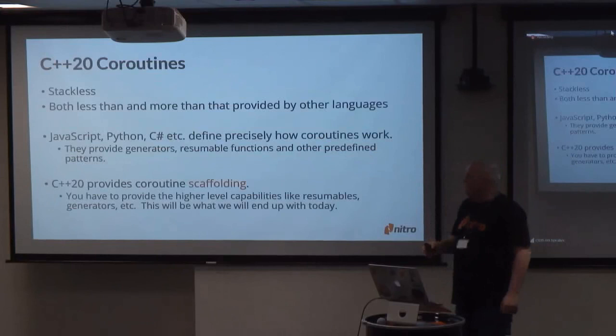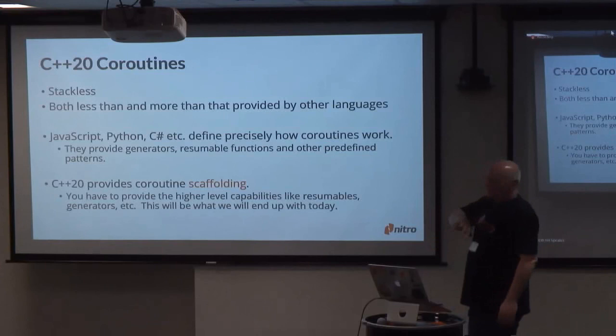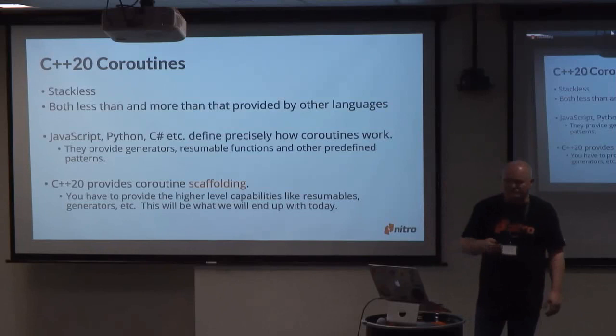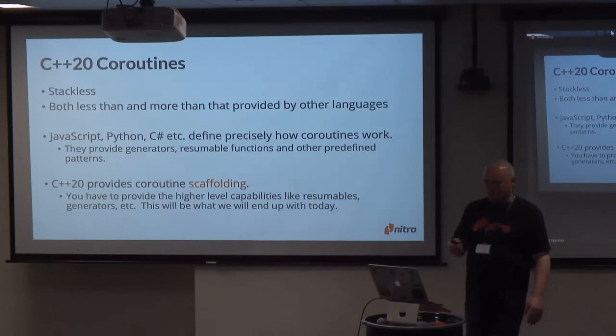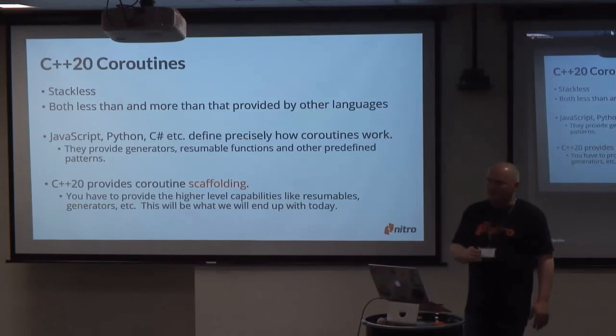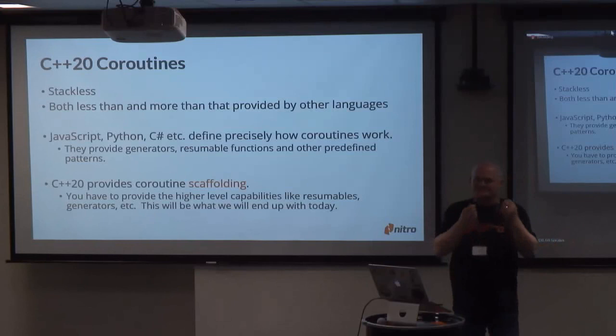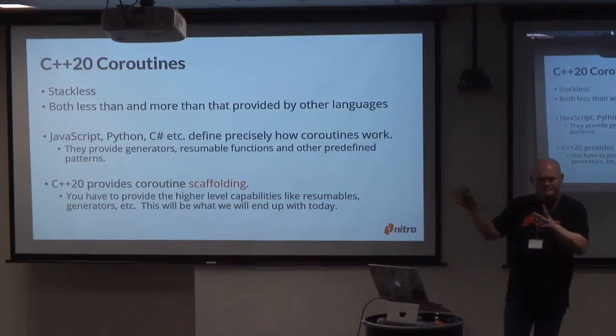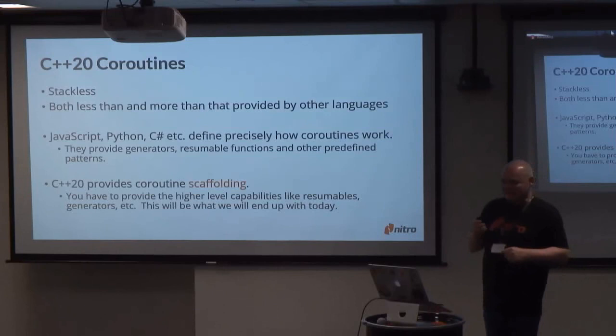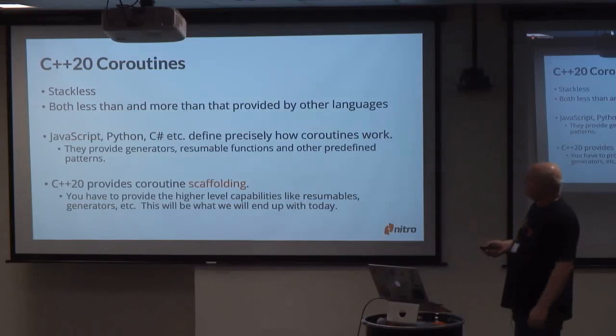C++20 coroutines are stackless — this is the key feature. This gives them a bit less and a bit more than is provided in other languages. JavaScript, Python, C#, etc. come with a lot of support for coroutines, resumables, and generators. The thing about C++20 is it's scaffolding — you do not get the high-level objects. It's like pointers: what can you do with a pointer? Well, you can do anything, but it's just a number that dereferences into something else — that something else is where the meat is. We don't have that something else in C++20; it is expected in C++23 to be standardized.